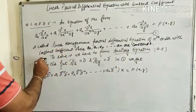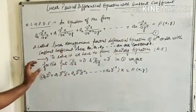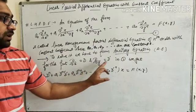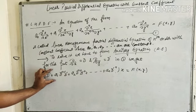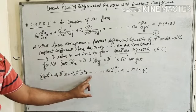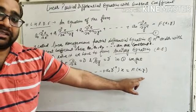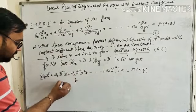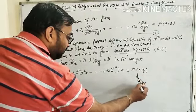To solve it, we have to form the auxiliary equation. To form the auxiliary equation, we put ∂/∂x = D and ∂/∂y = D'. Substituting into equation 1, we get: a₀Dⁿ + a₁Dⁿ⁻¹D' + a₂Dⁿ⁻²D'² + ... + aₙD'ⁿ applied to z equals f(x,y). To solve this type of equation, we find two functions: CF from the LHS and particular integral from the RHS.